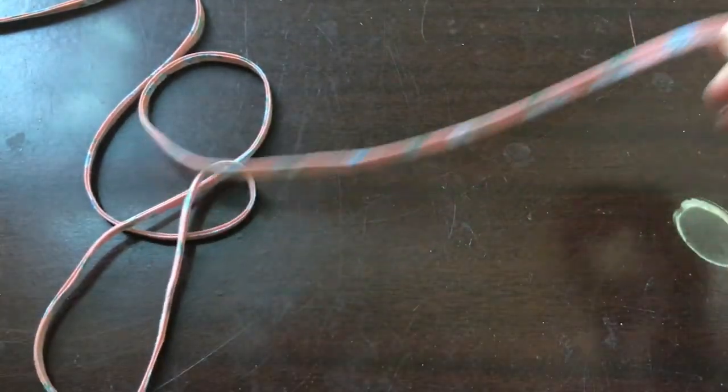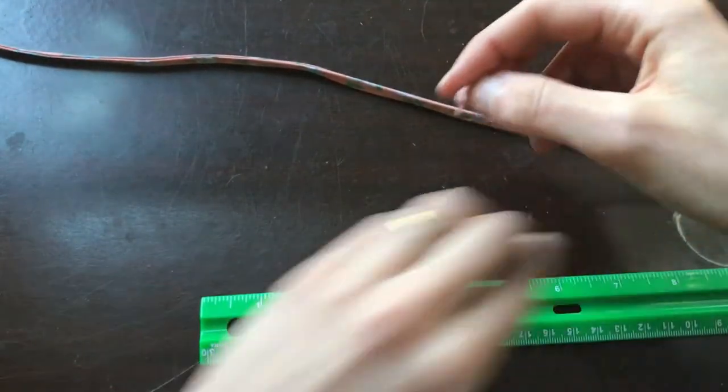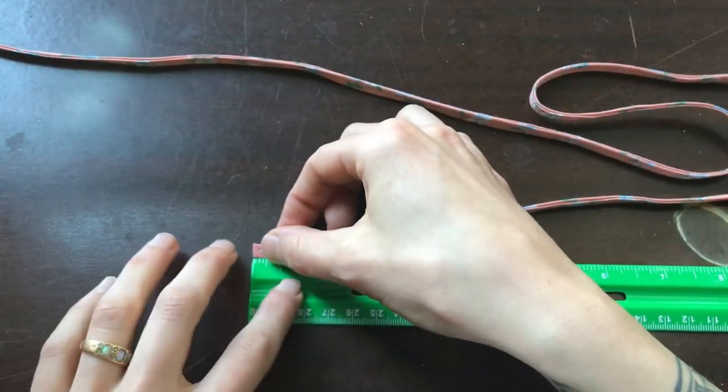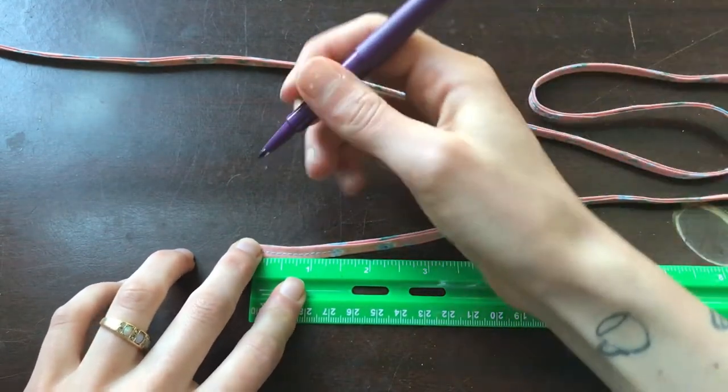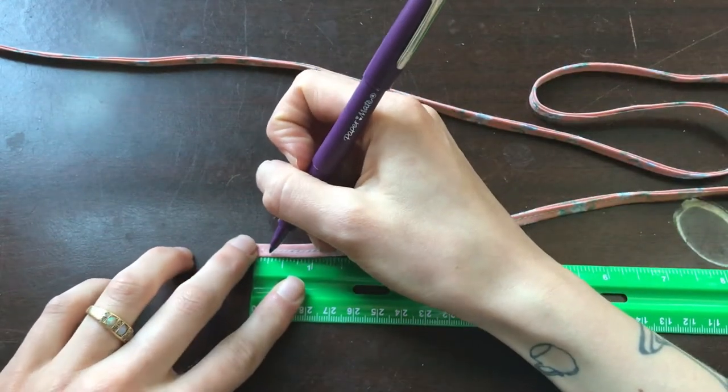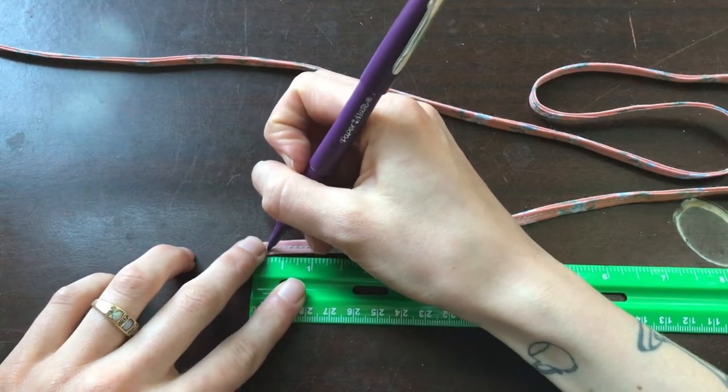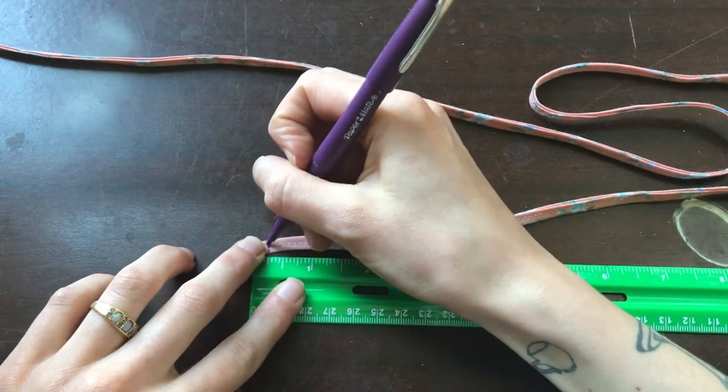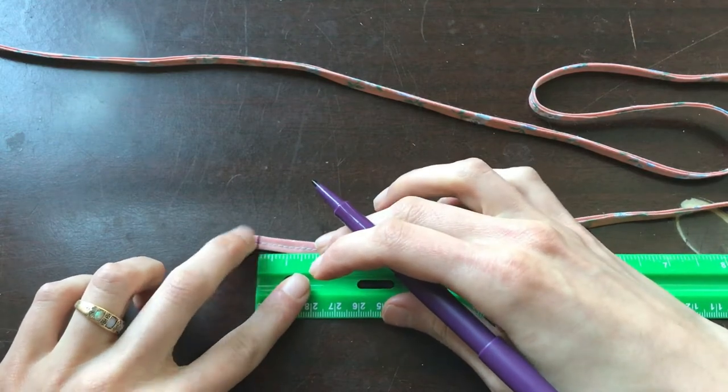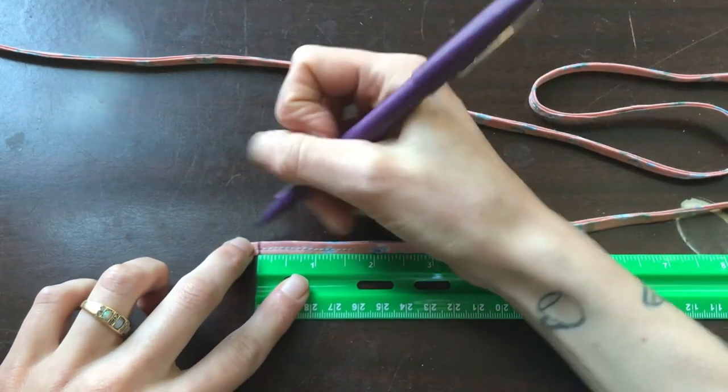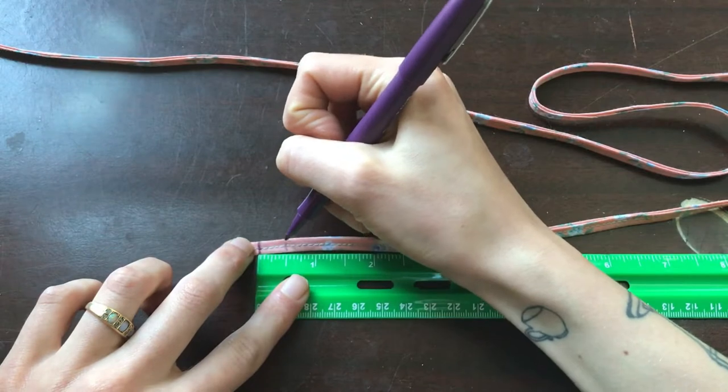So you're going to take your ruler and line the edge of your shoelace up with the edge of the ruler and then make a mark at a quarter of an inch. And then you're going to make another mark a half an inch away from the first mark.